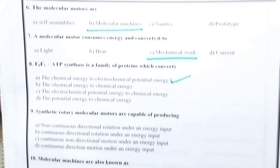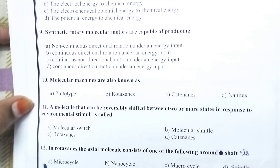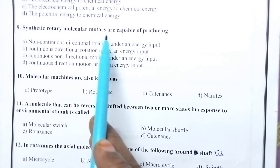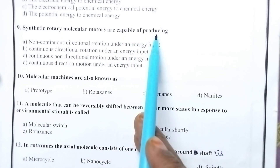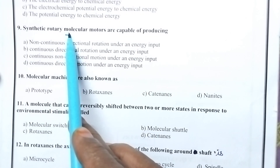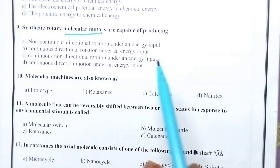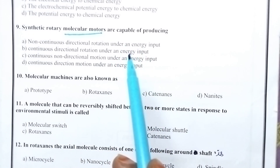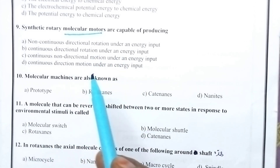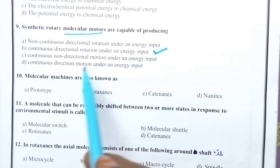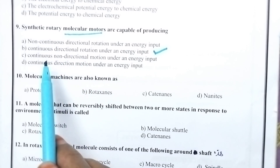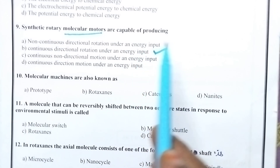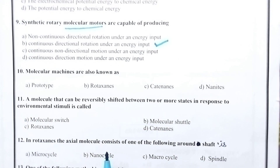A synthetic rotary molecular motor is capable of producing — especially, molecular motors are responsible for circular motion. They exhibit directional rotation by the input of energy. So option B, they are responsible for producing continuous directional rotation under an energy input, is the right answer.